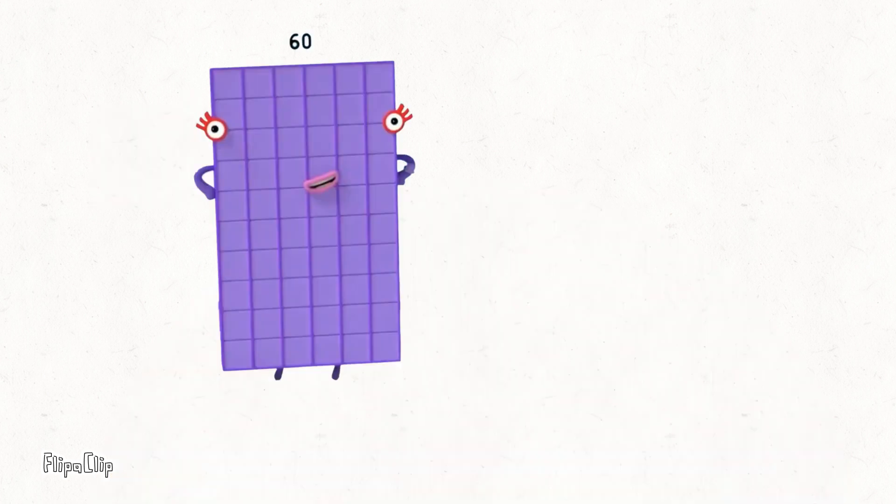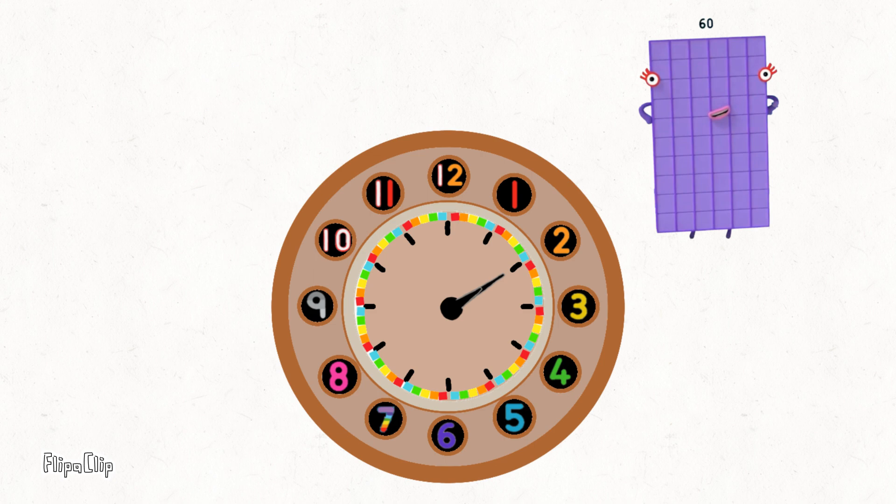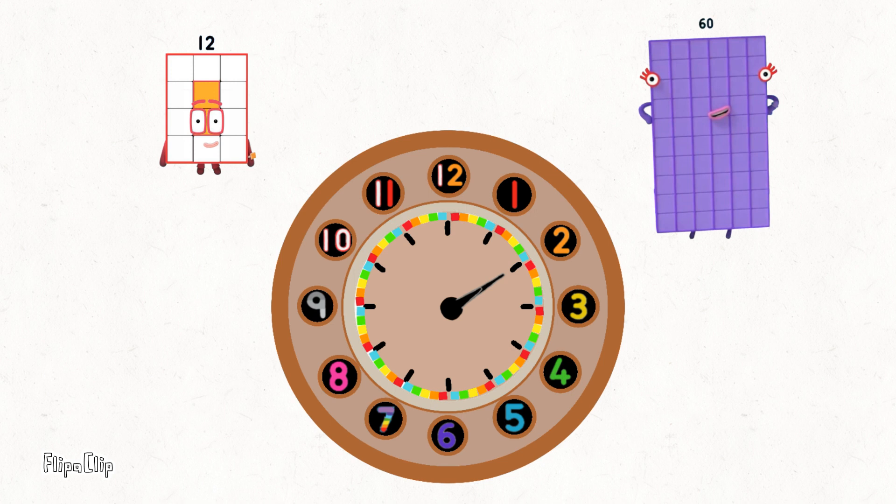Then we start again all over from zero. While minutes raced around the face, the hour hand moved on one place. And if you put both hands together, reading one and then the other, you can tell the time.